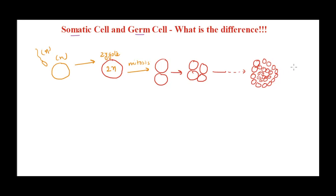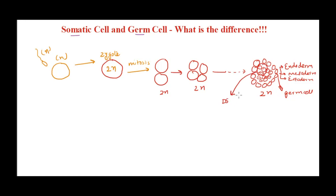All these cells are diploid. We also know the concept of cells differentiating into specific cell lines — endoderm, mesoderm, ectoderm — and we also have the germ cell line. Some cells differentiate into the digestive system, some develop into the lungs and respiratory system, some differentiate into brain cells.